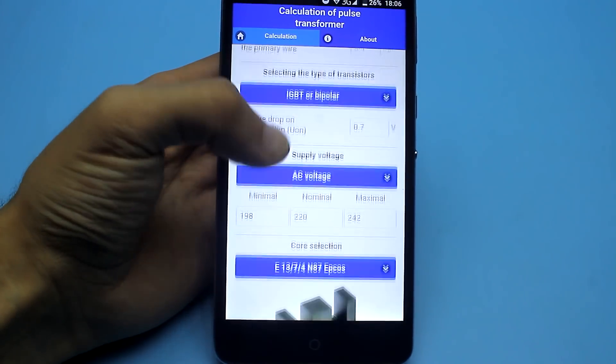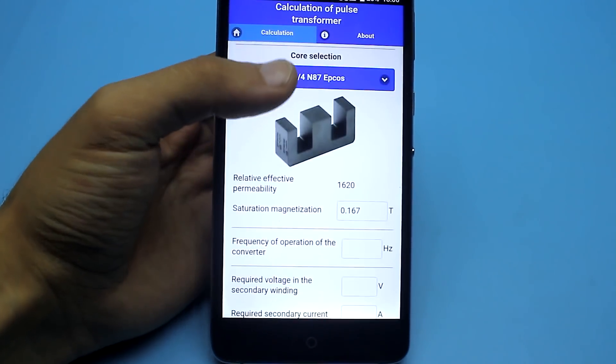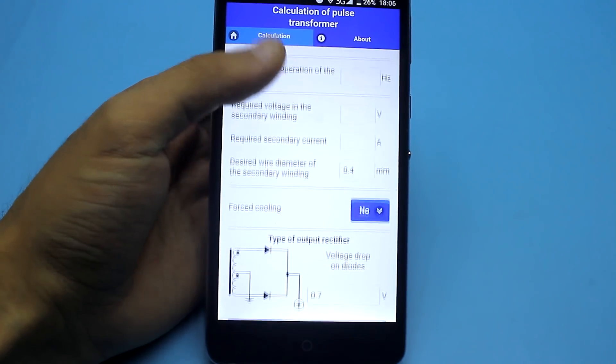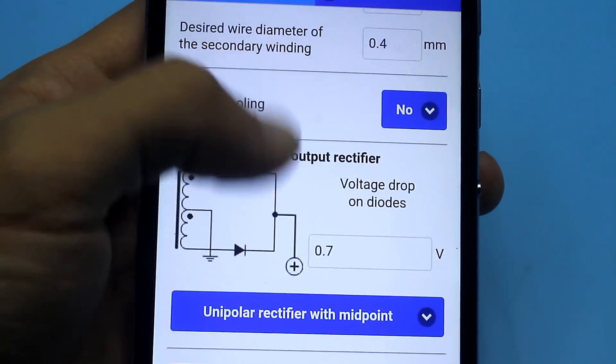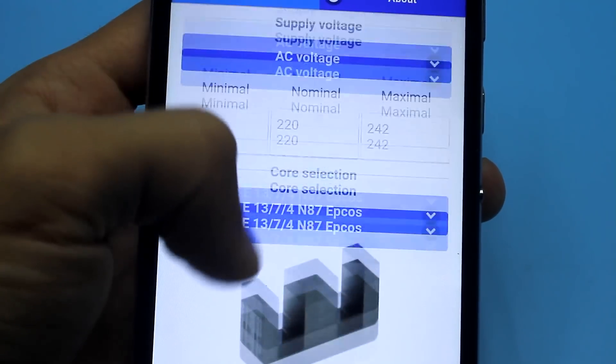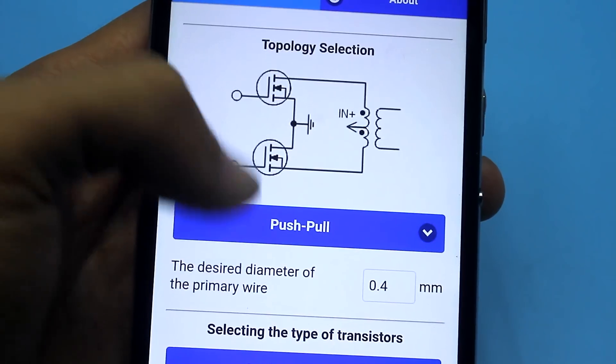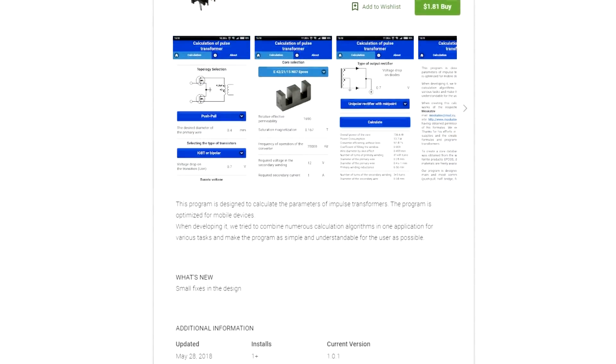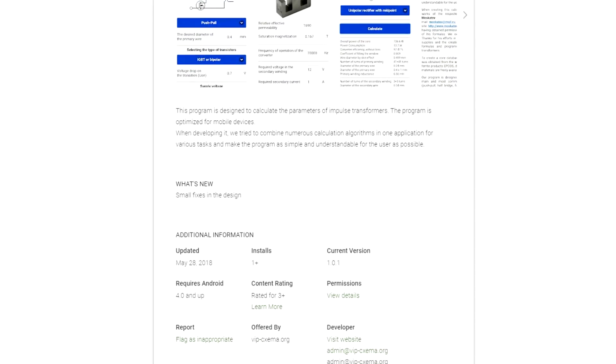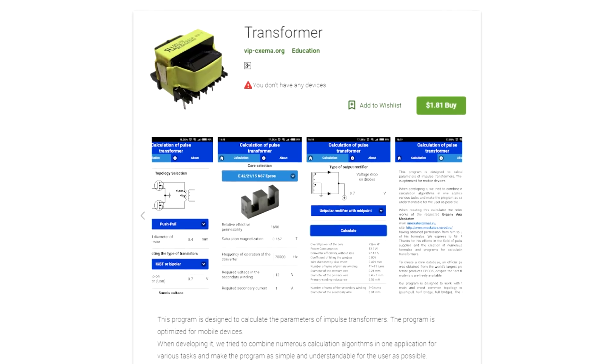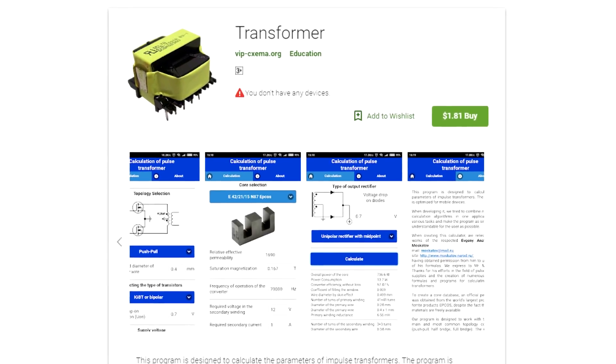At the moment, the application is available in two languages, Russian and English, only for users of the Android operating system, but very soon there will be a version for Apple. The application isn't free, but the cost is symbolic. I think everyone can afford. A link to the application is in the description.